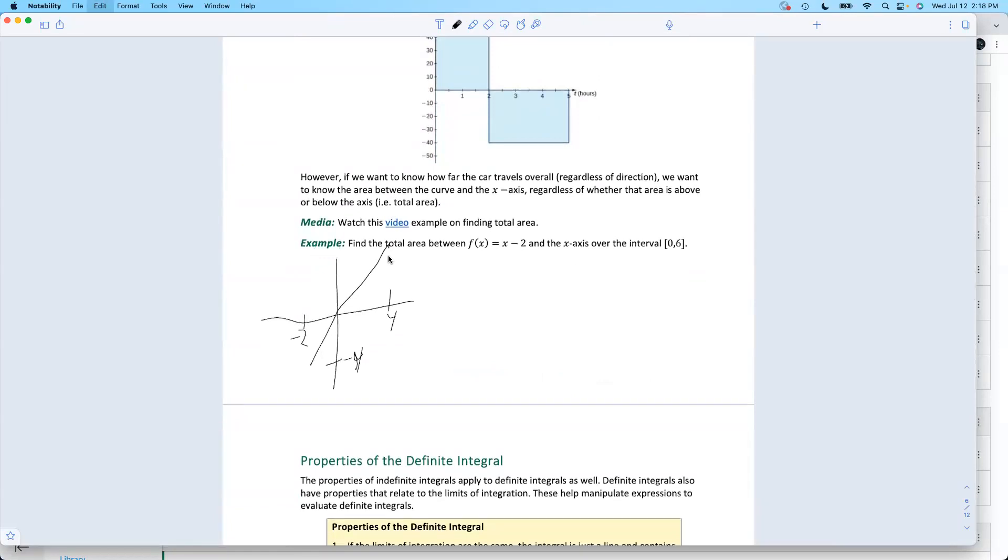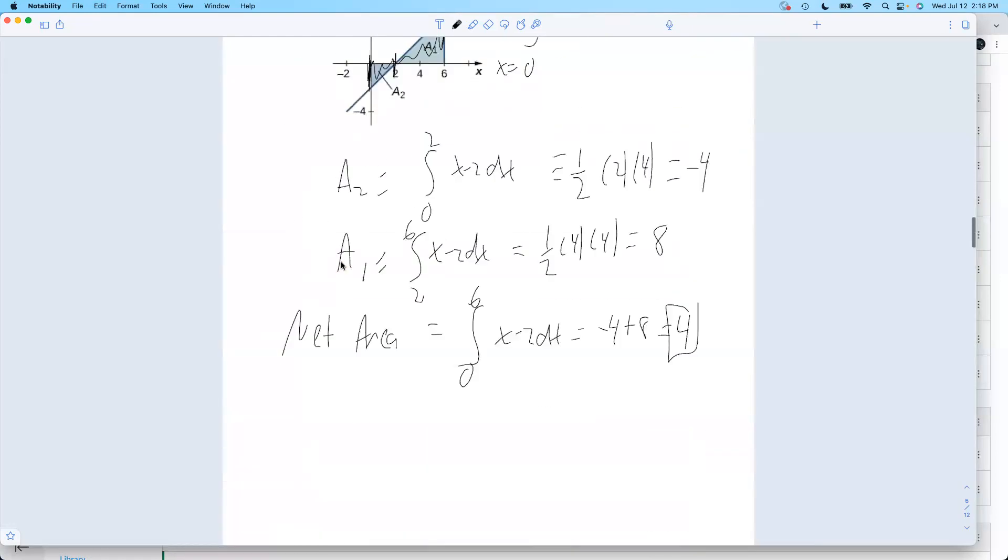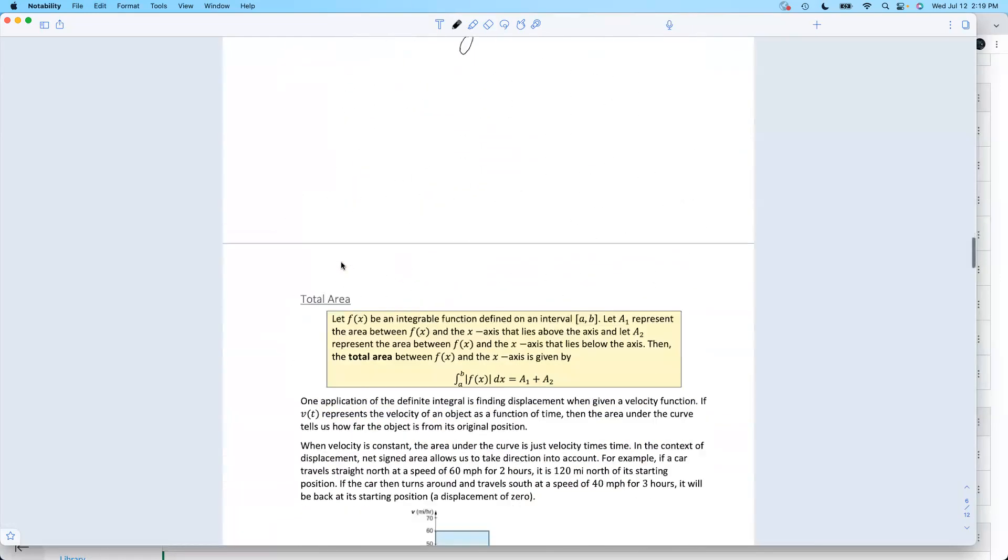And I redrew it wrong. Sorry, let me fix that. Here's negative four. This was a two, and then at four. At six, we were at four.